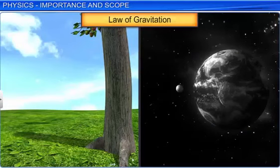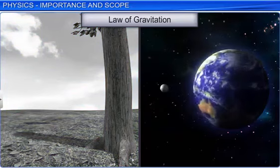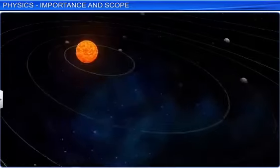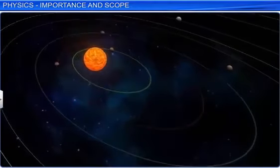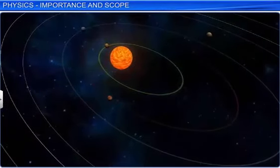For example, the law of gravitation, which describes the motion of an apple detached from a tree, which eventually falls to the earth, also explains the nature of the forces between earth and the moon, and also the force that bounds the planets in the solar system in their orbits and keep them in motion in their paths.